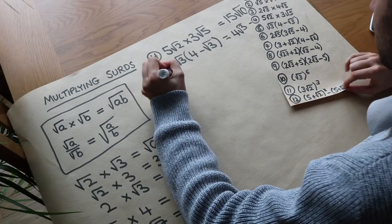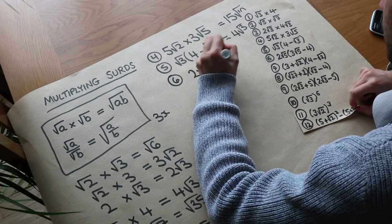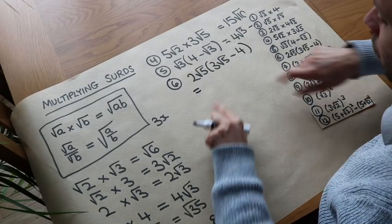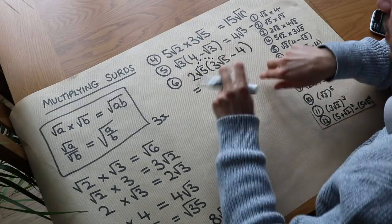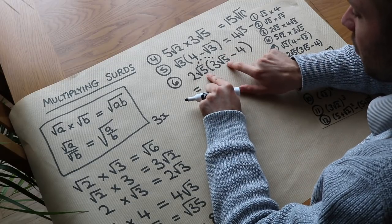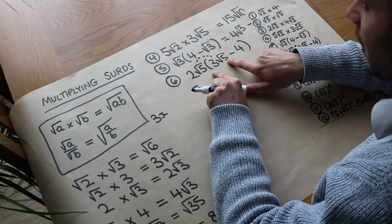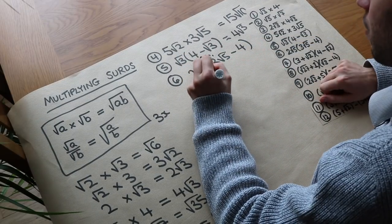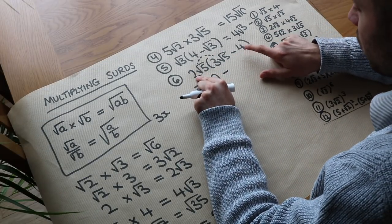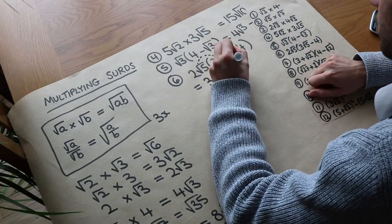What about question 6? We've got 2 root 5 times (3 root 5 minus 4). Let's try and do as much of this in our head as we can. We've got this times this first: 2 times 3 is 6, and root 5 times root 5 is just 5, so we've got 6 times 5 which is 30. So that whole first part is 30 minus — and then 2 root 5 times 4: the 2 times the 4 is 8 and we've still got that root 5, so it's minus 8 root 5.